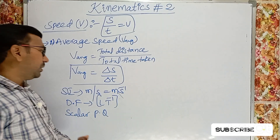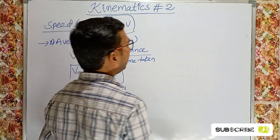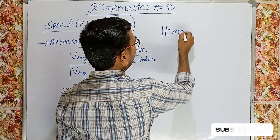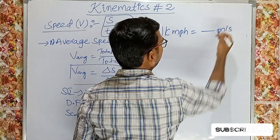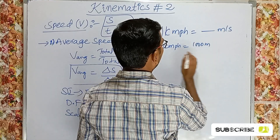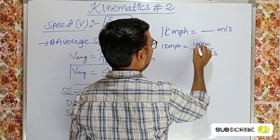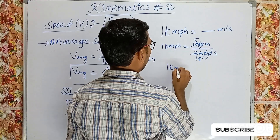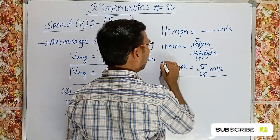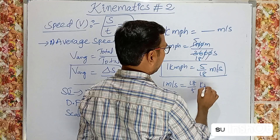Sometimes you can measure average speed in kilometers per hour. 1 kilometer per hour equals 1000 meters per 3600 seconds, which simplifies to 5/18 m/s. Conversely, 1 meter per second equals 18/5 kilometers per hour.